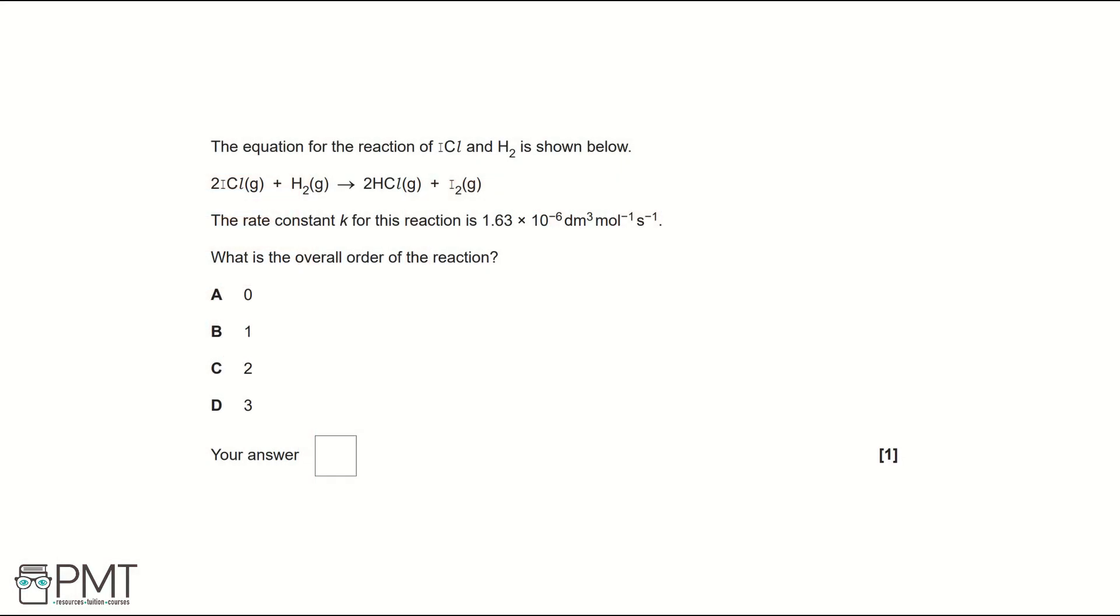The equation for the reaction of ICl and H2 is shown below. The rate constant K for this reaction is 1.63 times 10 to the negative 6 decimetres cubed per mole per second. What is the overall order of the reaction?